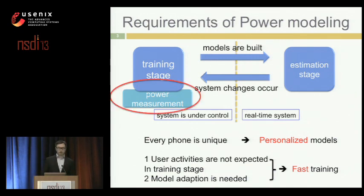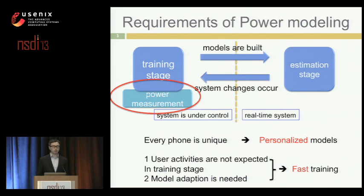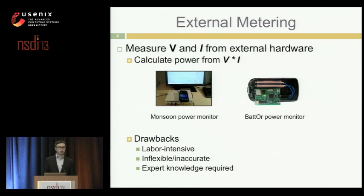There are several categories of previous work according to different power measurement methods, and those two categories of existing work do not fulfill these two requirements. The first is external metering, which provides voltage and discharging current information from external hardware — for example, the Monsoon power meter and battery power monitors. They are fast and accurate, but they have limitations because you cannot expect end-users to use these devices to build a specific model for their own phone.